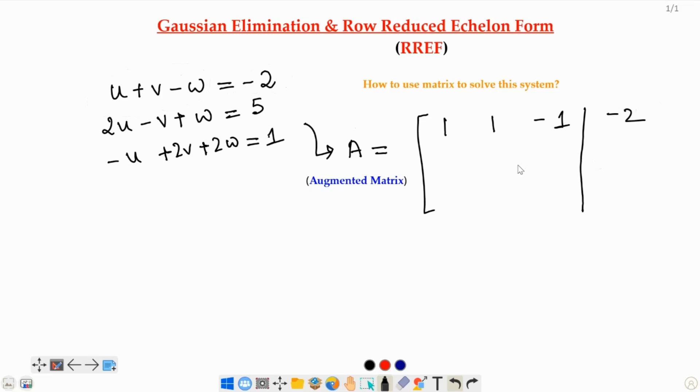Now, for the second equation the coefficients are 2, negative 1 and 1, and for the last equation it is negative 1, 2, 2. Now, what I am going to do is convert this matrix into row echelon form.